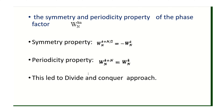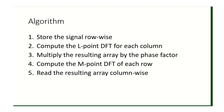These two properties lead to the divide and conquer approach. Here is a brief overview of the algorithm: first, store the signal row-wise; second, compute the L-point DFT; third, multiply the resulting array by the phase factor; fourth, compute the M-point DFT; and finally, collect the resulting array column-wise. This is how the algorithm works.